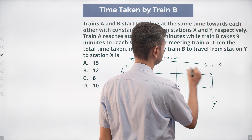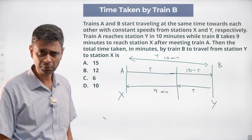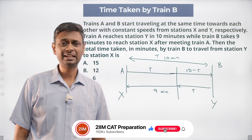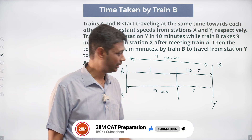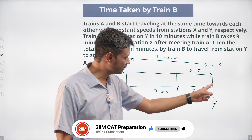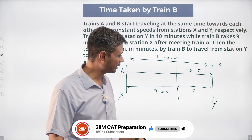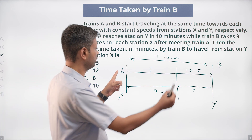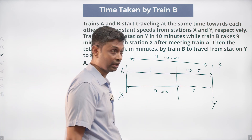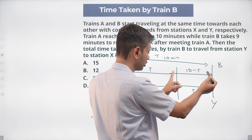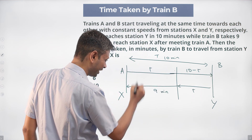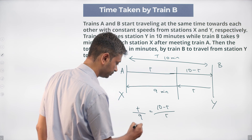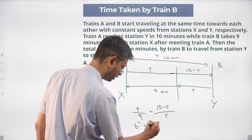The time taken before the meeting point is T, so the remaining time for Train A after meeting is (10 − T) minutes. Using the ratio of speeds: Train A travels Train B's pre-meeting distance in T minutes, and Train B travels it in 9 minutes. Train B takes T minutes to travel Train A's pre-meeting distance, while Train A takes (10 − T) minutes. Therefore the ratio gives us: T/9 = (10 − T)/T.